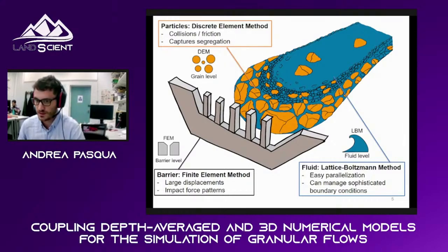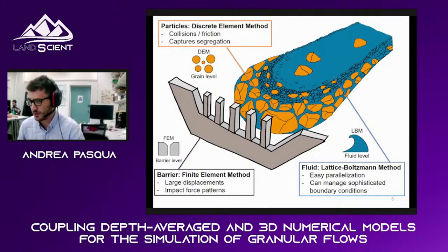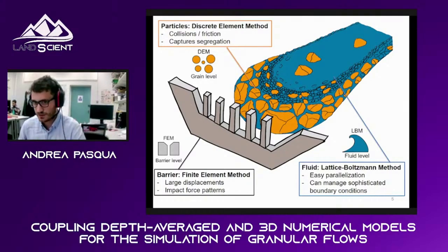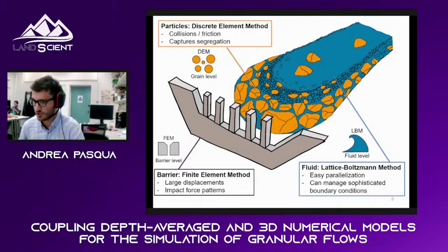The fine part is mixed and homogenized with the liquid fraction, which is solved by the 3D lattice Boltzmann method. The lattice Boltzmann method is quite a recent flow solver and it is easy to couple with DEM. If a body is present and it is necessary to study the structural response, the finite element method is employed.